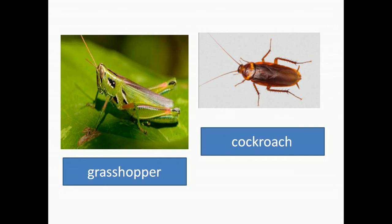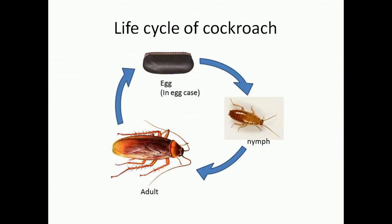Other examples of insects are the grasshopper and cockroach, which have three stages in their life cycle. In the case of cockroaches, when the baby hatches and comes out, it is called a nymph and it looks like the adult cockroach. But it sheds its skin and gets new skin many times — this shedding of the skin is called moulting. After it undergoes several moultings, it finally becomes an adult cockroach.